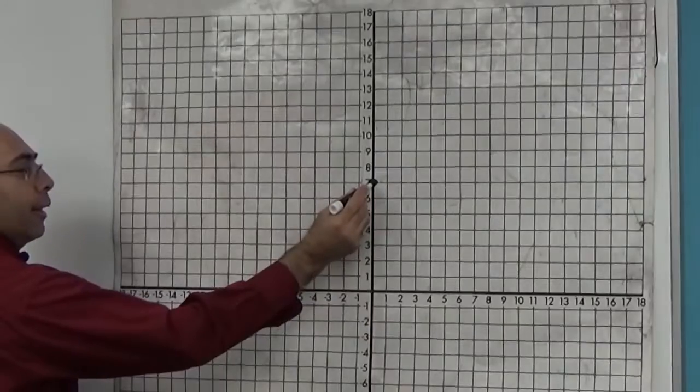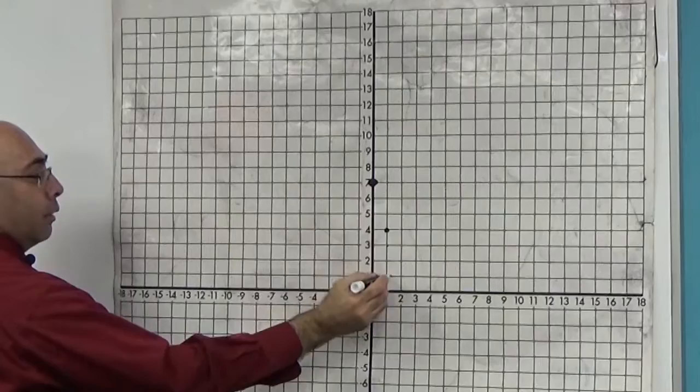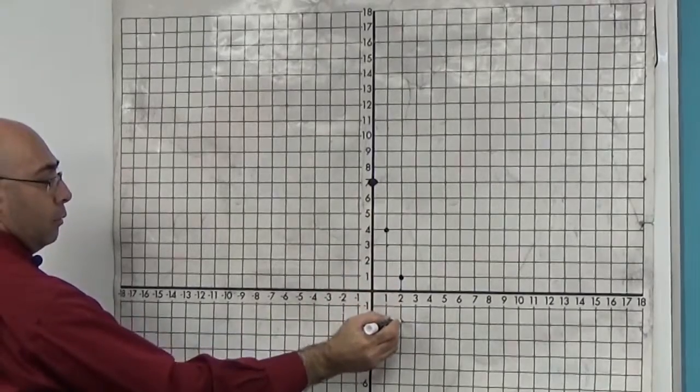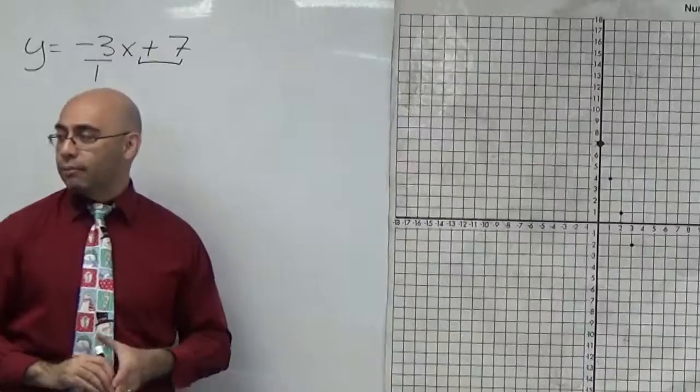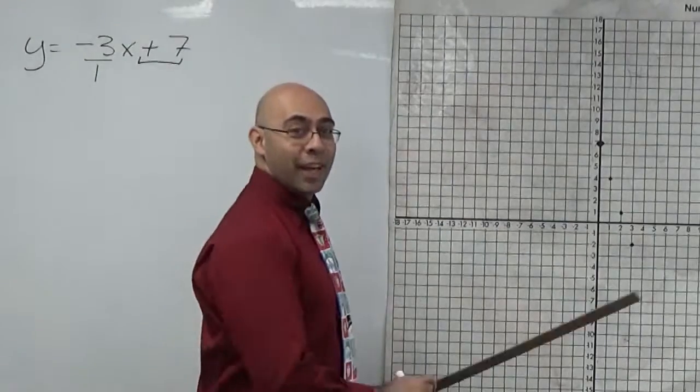So from here, I go down 3, 1, 2, 3, and to the right 1. And I can keep going down and just keep doing that if I want to. You only have to do that once. I just do it so many times because I'm doing it for the camera.